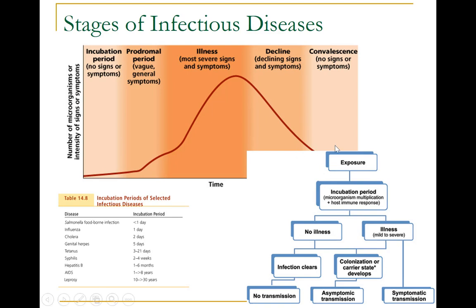The final period is known as the period of convalescence, as shown at the end. During this stage the patient generally returns to normal functions, although some diseases may inflict permanent damage that the body cannot fully repair. Infectious diseases can be contagious during all five of the periods of disease. Which periods of disease are more likely to be associated with transmissibility depends upon the disease, the pathogen, and the mechanisms by which the disease develops and progresses.